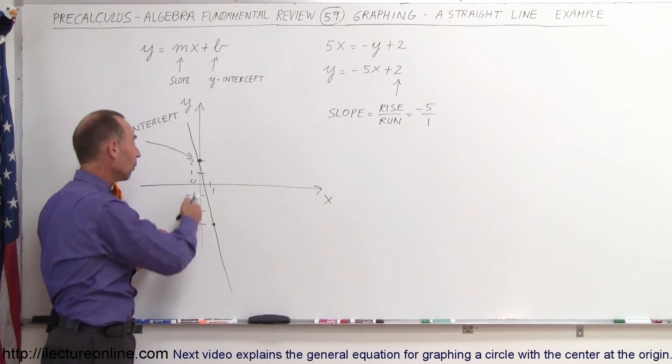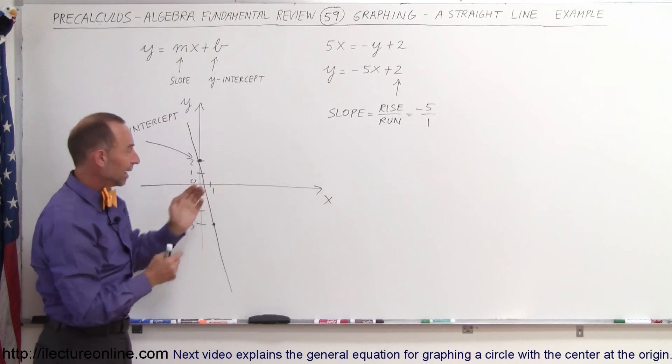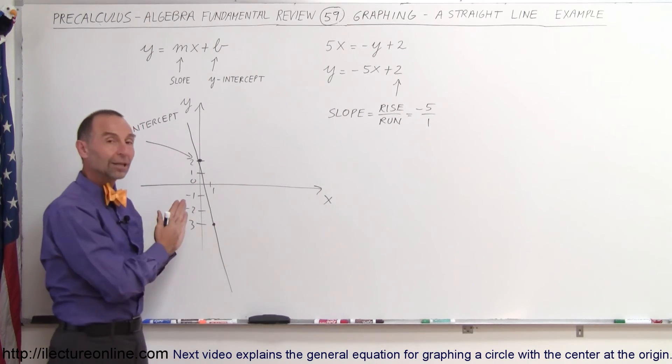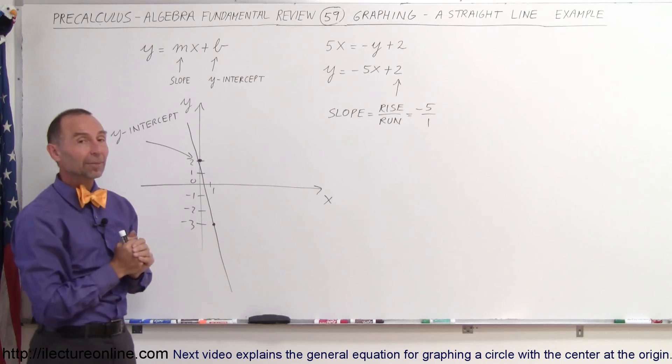Find the rise or the run, go up or down the number of units, and then take the run, which is to the right, however many units you have in the denominator.